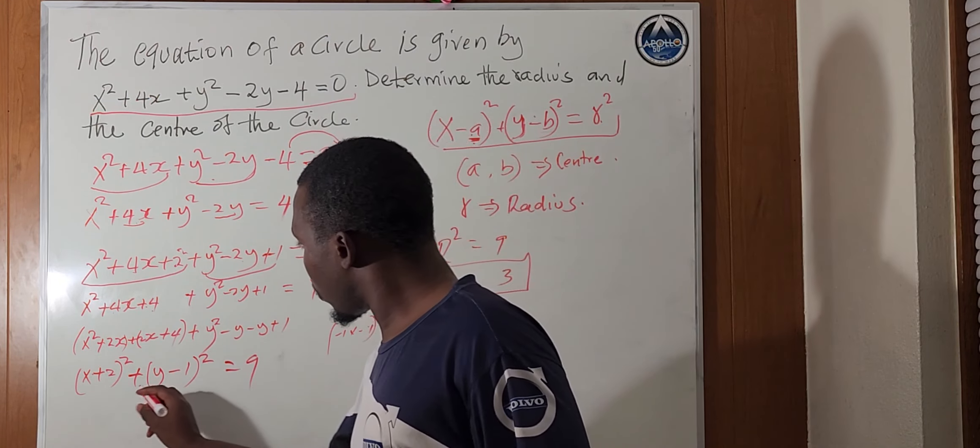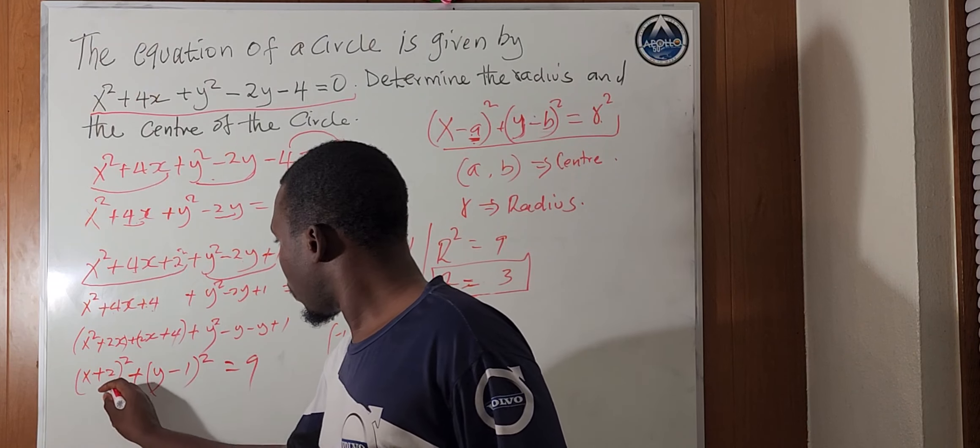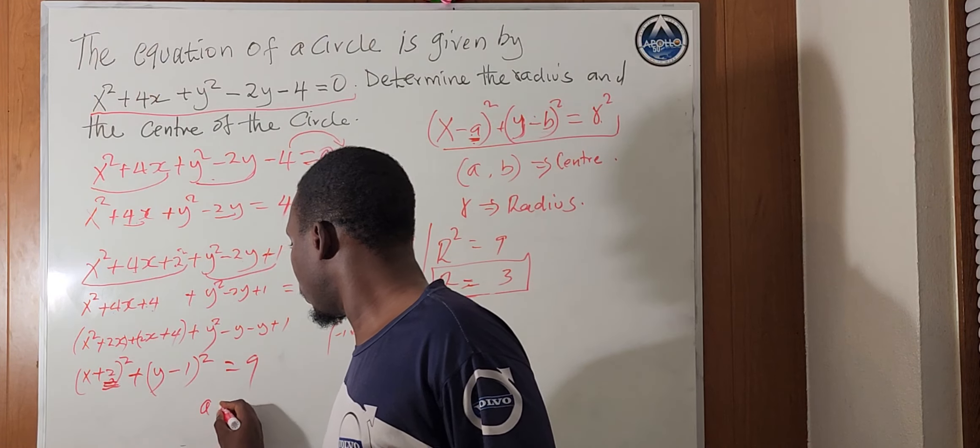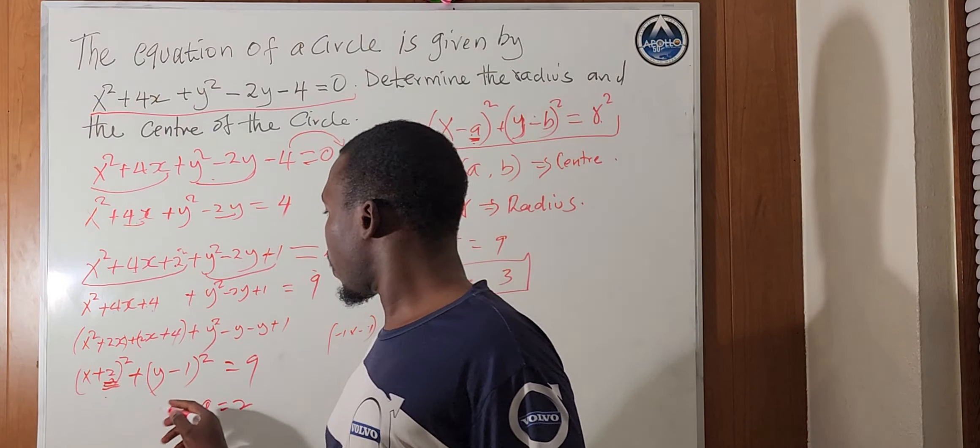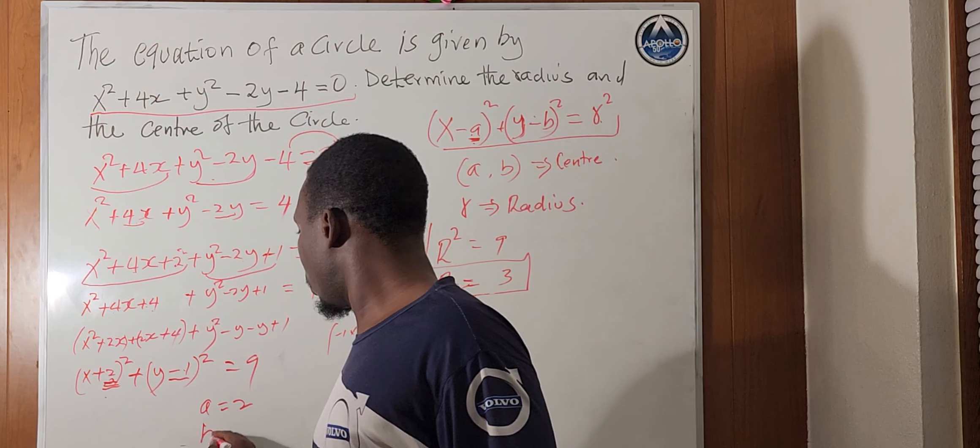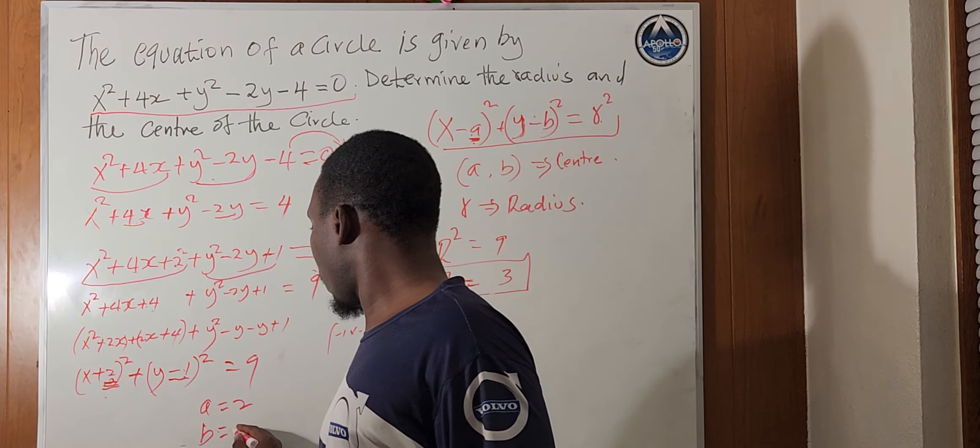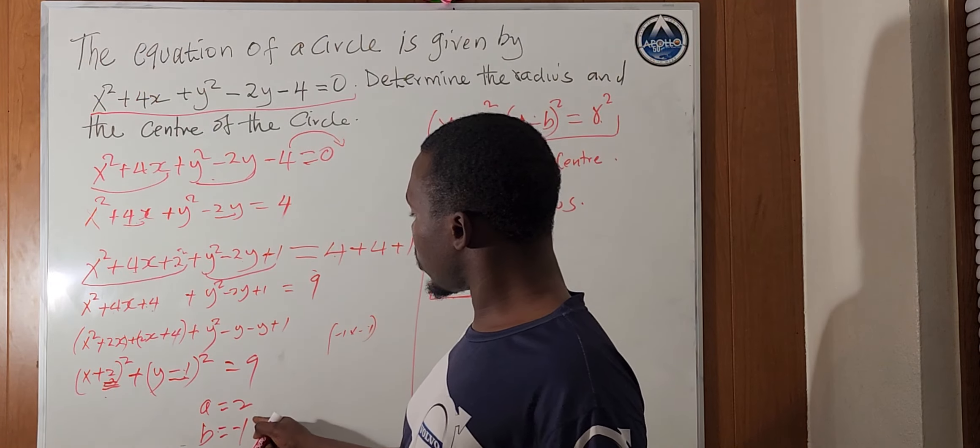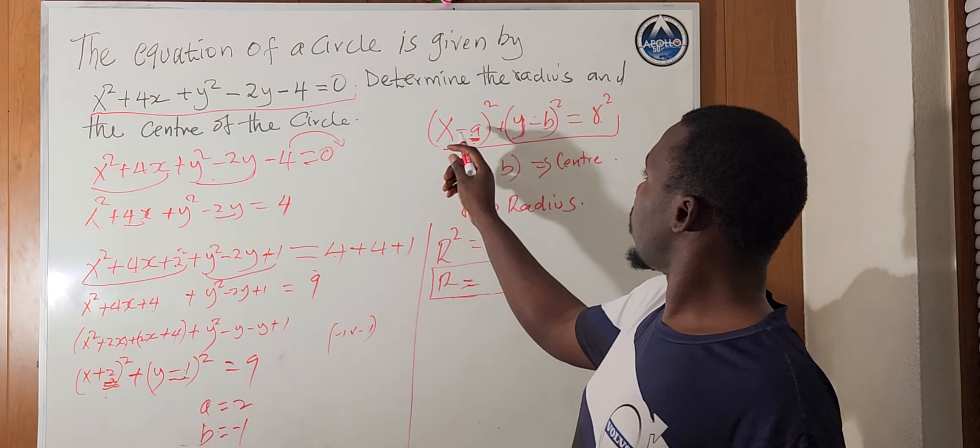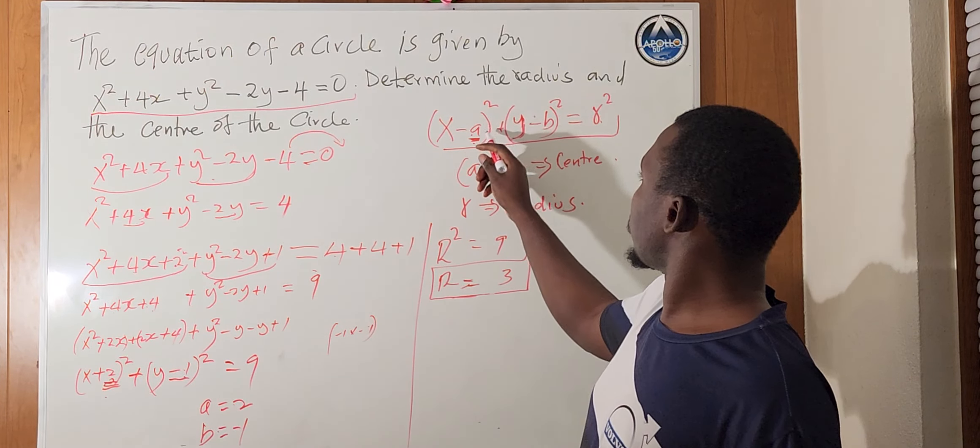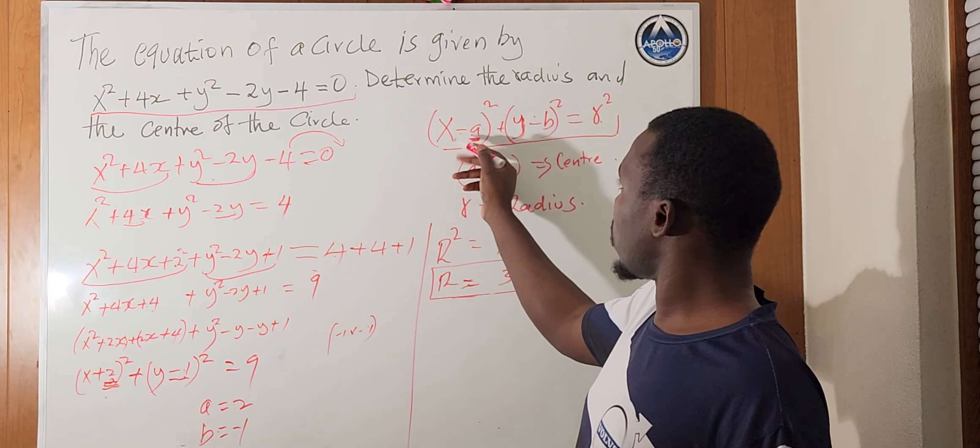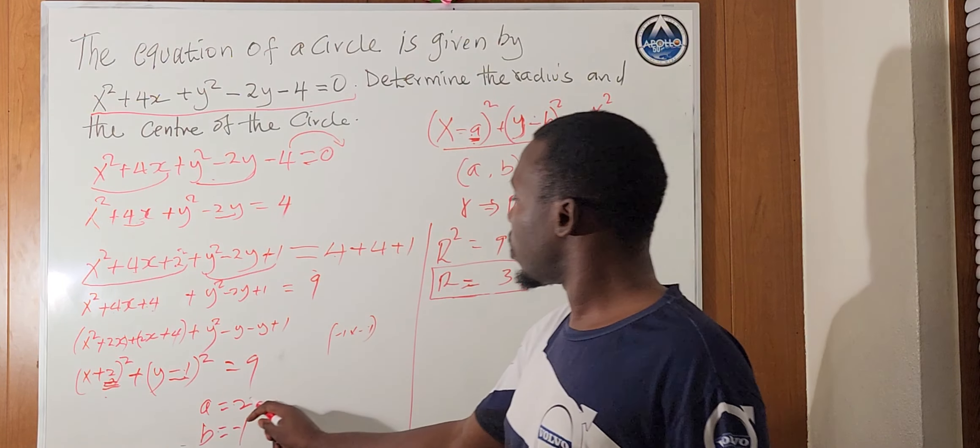So, from here, we can see that x already, the a is 2. So, our a equals 2 from the question here. And, our y minus 1, b is here. b will be minus 1. But, we need now to consider the signs here. The equation of our circle is given by x minus a squared plus y minus b squared. So, there is a minus here. So, we'll take a times minus here.